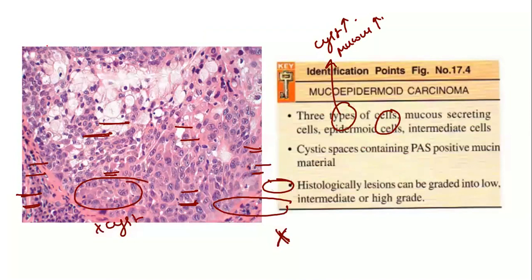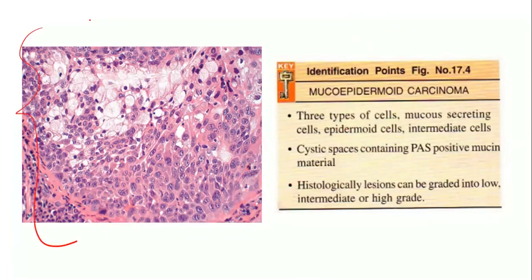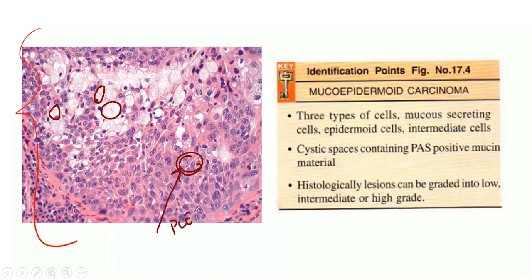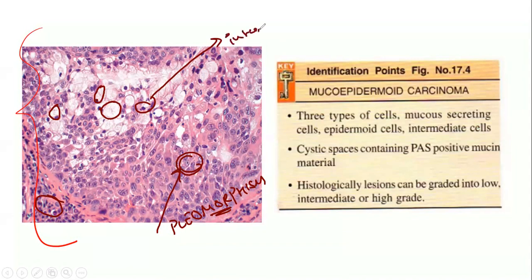In this histological section, we can identify the mucous-producing cells with abundant cytoplasm and peripheral nuclei. The epidermoid cells show considerable pleomorphism, suggesting this is a high-grade tumor. Some basaloid intermediate cells are also visible — identified by their small size, hyperchromatic nuclei, and very little cytoplasm. Key histological points are: three cell types, cystic spaces, and grading into low, intermediate, and high grade.